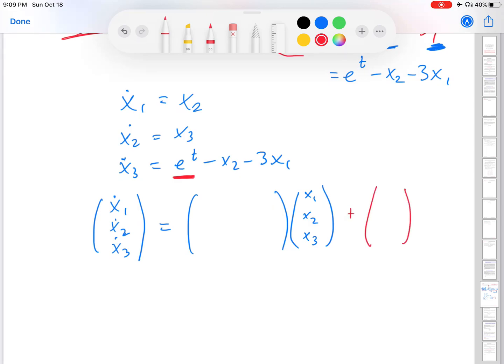I'll take care of that first because that term goes along with the third equation. And again, it doesn't multiply any of the x's. So I'm just going to put an e to the t down here. There are no other functions of t on the right-hand sides of these first two equations. So I'm going to put zero here and zero here.